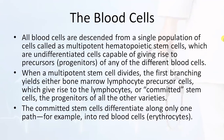All blood cells are descended from a single population called multipotent hematopoietic stem cells — undifferentiated cells capable of giving rise to precursors of any blood cell type. When a multipotent stem cell divides, the first branching yields either bone marrow lymphocyte precursor cells, which give rise to lymphocytes, or committed stem cells — the progenitor of all other varieties. Lymphocytes are B lymphocytes and T lymphocytes; T lymphocytes are important for cell-mediated responses and B lymphocytes for humoral responses.